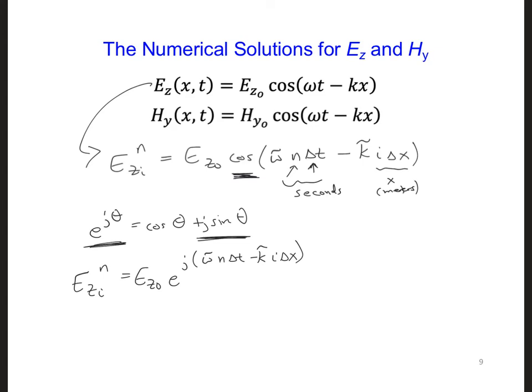Similarly, for the magnetic field, which is evaluated at half integer time steps, we have spatial positions I plus a half and N plus a half is HY naught, and I'm going to use Euler's identity again. So we have E to the J omega tilde, and instead of N, I have N plus a half delta T minus K tilde times I plus 0.5 times delta X.